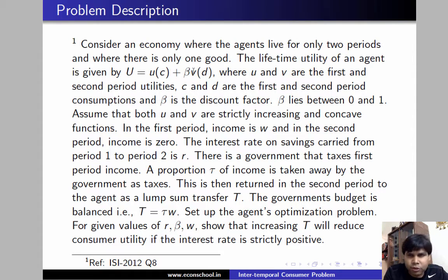The lifetime utility of an agent is given by U which is equal to UC plus beta VD where U and V are first and second period utilities. C and D are the first and second period consumptions and beta is the discount factor. We are also given that beta lies between 0 and 1.